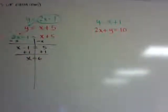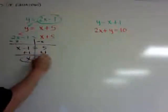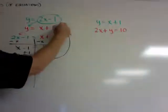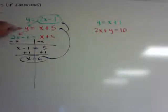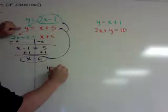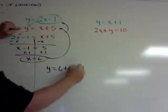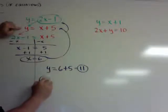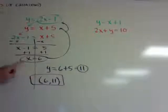If you remember when we solved by graphing, we need coordinates. So now that I have x equals 6, I need to find y. I can take this 6 and put it into either one of these equations, whichever one is easier. The red one is going to be easier, so I'm going to put it in there. y is equal to 6 plus 5, that equals 11. So the answer is 6 comma 11. Make sure you put your answer in coordinate form.